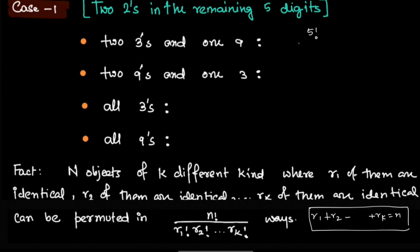Such numbers should be 5 factorial, because we are permuting 5 objects where we have two 3s, one 9, and two 2s. So it should be 5 factorial over 2 factorial for 2 identical 3s, and 2 factorial for 2 identical 2s, and 1 factorial for one 9, which gives us, if you calculate it, 30.